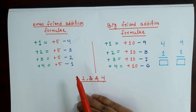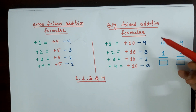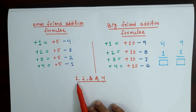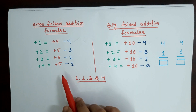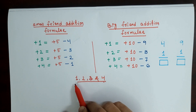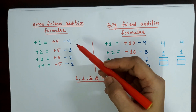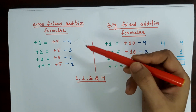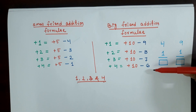Here I have listed 4 small friend addition formulas for 1, 2, 3, and 4, and 4 big friend addition formulas for 1, 2, 3, and 4. We already know that for 1, 2, 3, and 4 we can apply the small friend addition formula. Suppose you want to add 1, 2, 3, or 4 to a particular number — first check whether you can apply the small friend addition formula or not. If the small friend addition formula is not possible, then you can go for the big friend addition formulas.